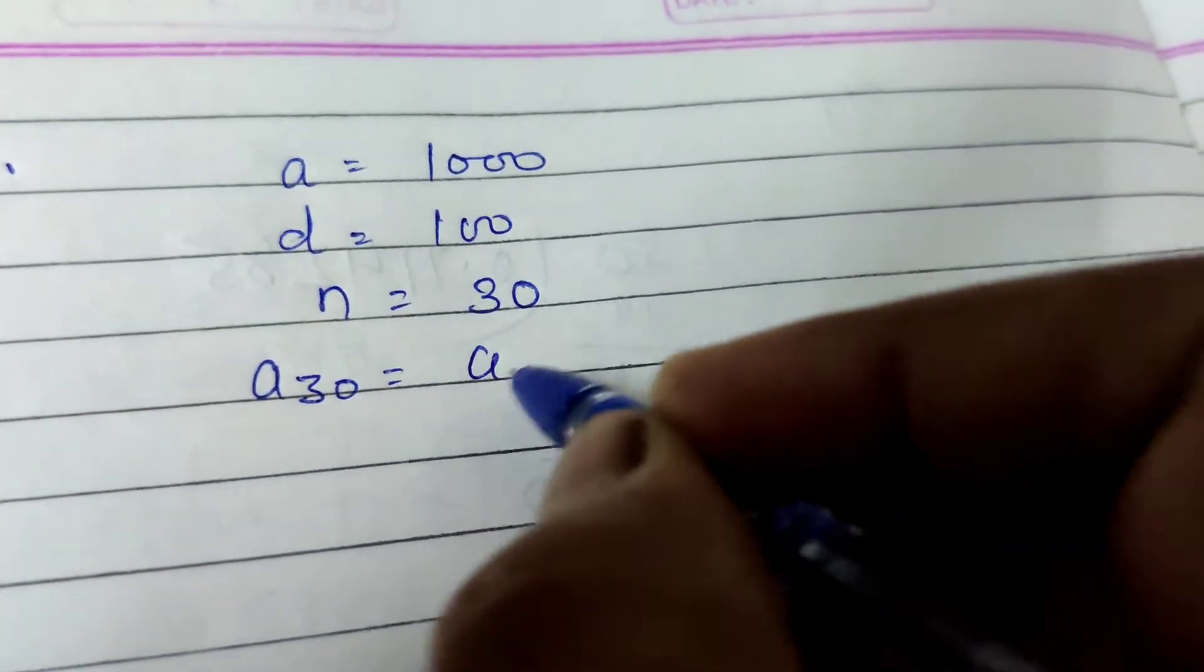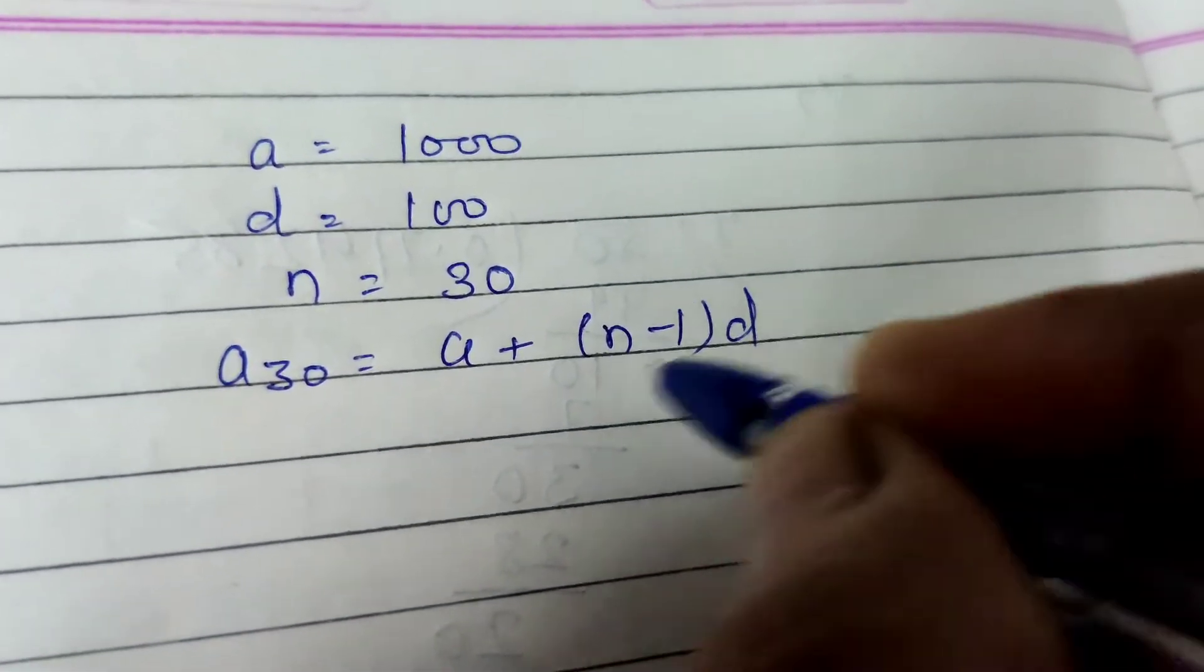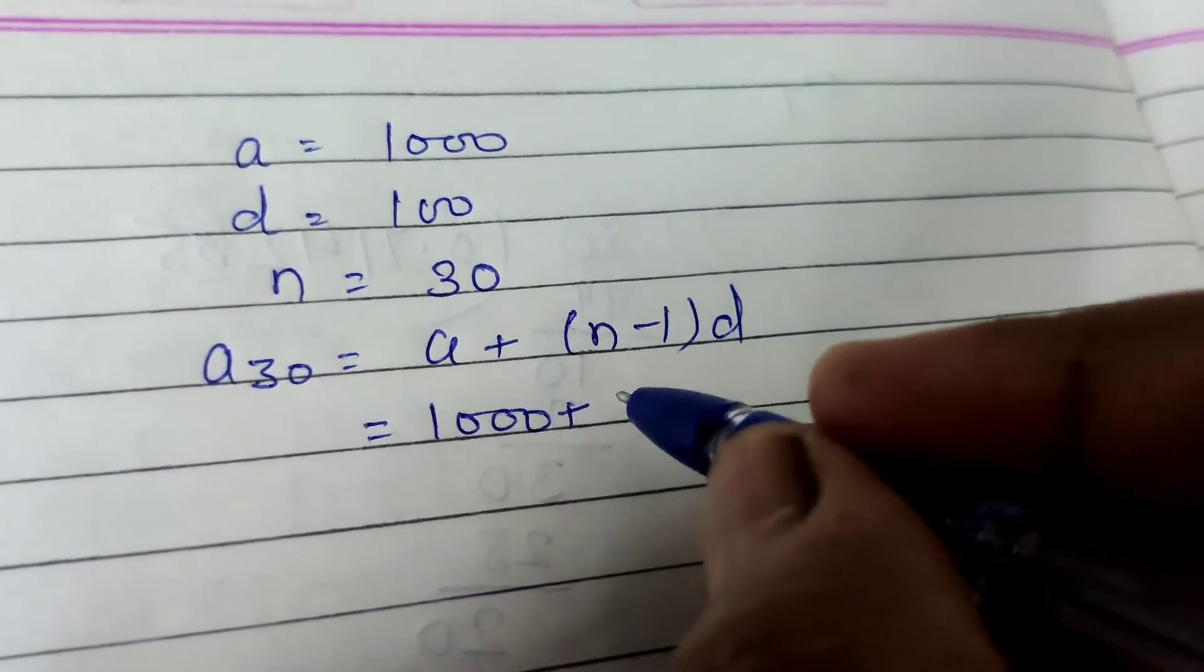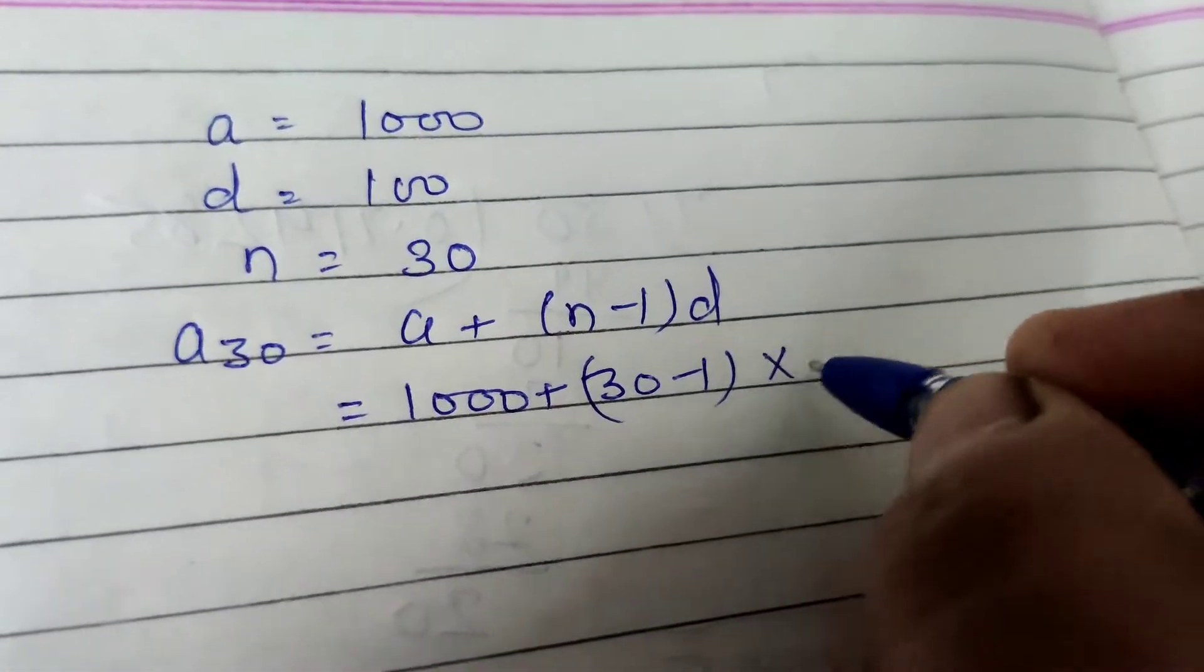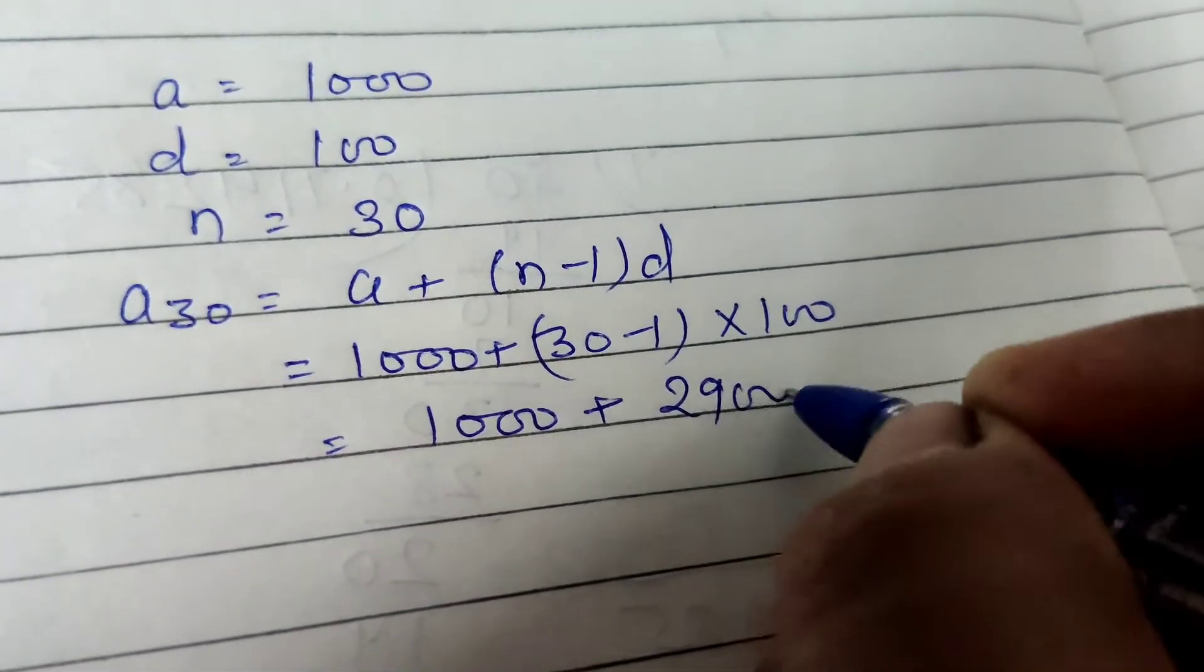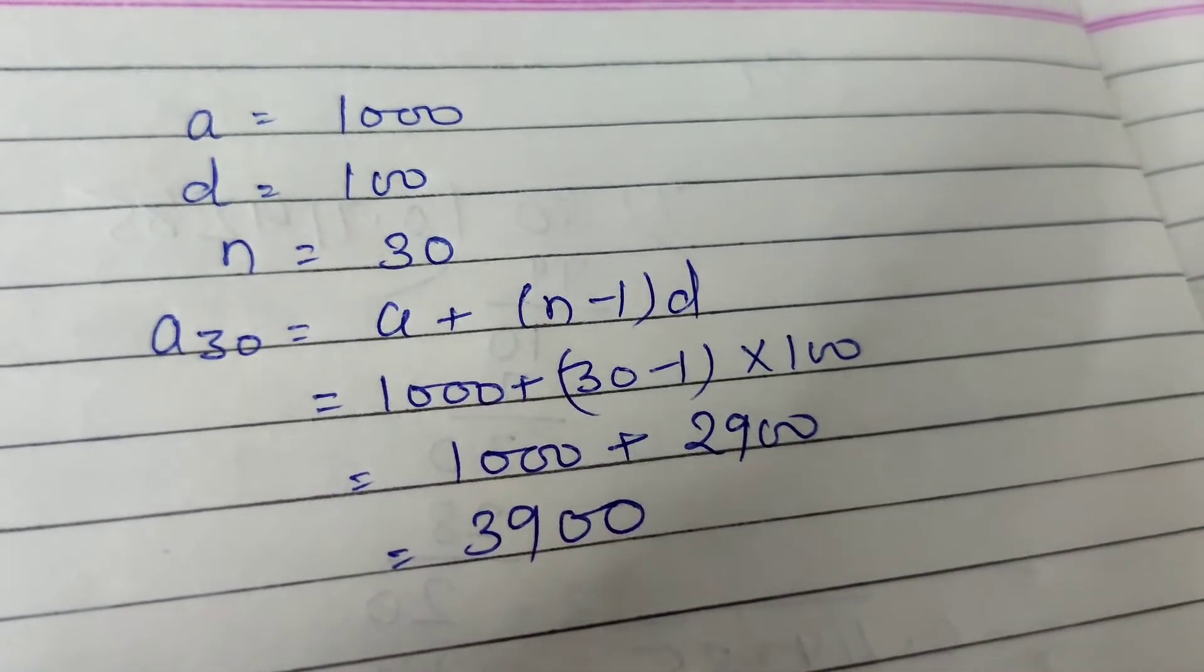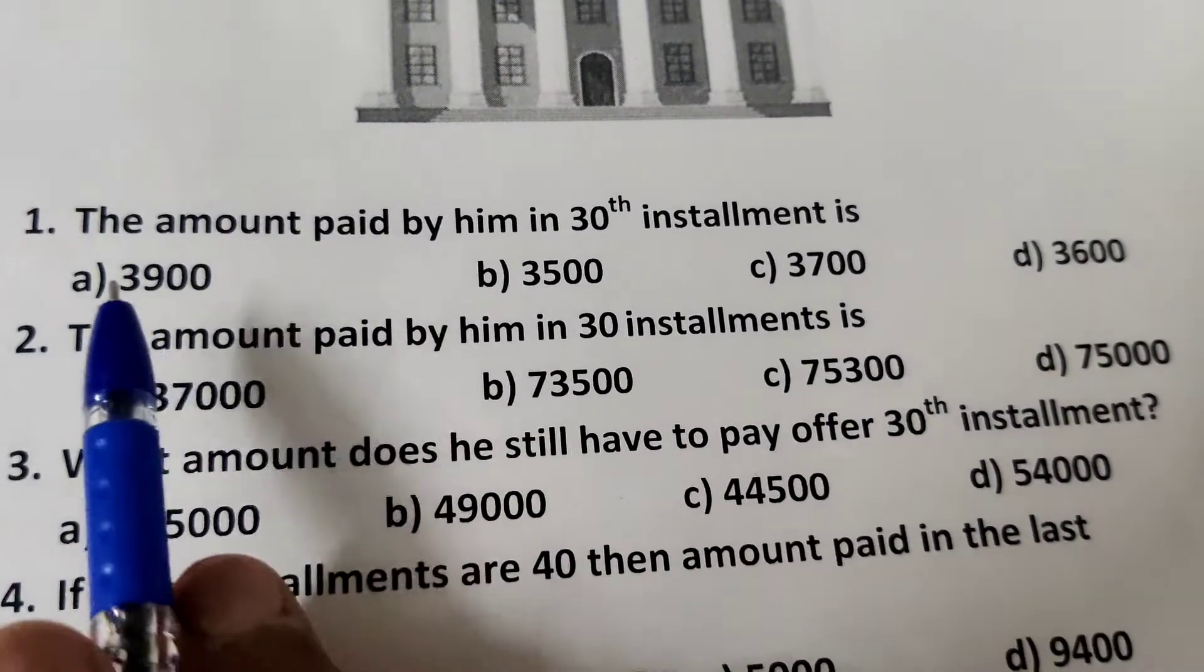Formula of 30th term: An equal to A plus n minus 1 into D. A is 1000, N minus 1 means 30 minus 1, it means 29, into 100. 1000 plus 2900, which is equal to 3900. This is the 30th installment. The right option is A.